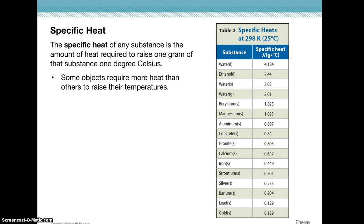Now let's talk about changing temperature — we've talked about changing state, but that happened at constant temperature. We can also use heat to increase or decrease the temperature of a substance. To do that, we need to know the specific heat of a substance, which is the amount of heat required to raise one gram of that substance one degree Celsius. Metals have very low specific heats, so it doesn't take much heat to change a metal's temperature, whereas water has a very high specific heat. We'll use a specific heat table as constants for our calculations.